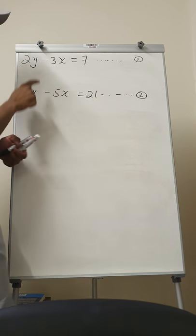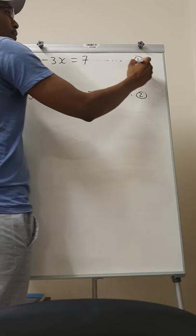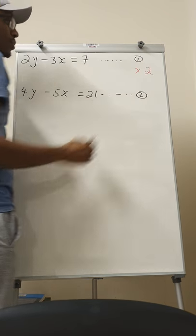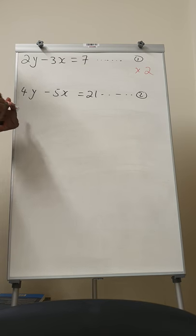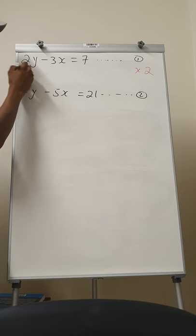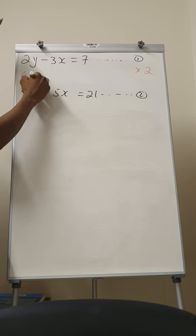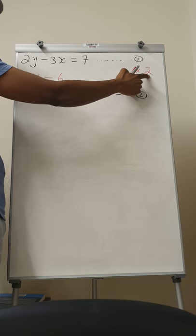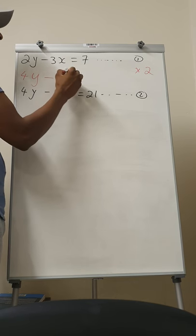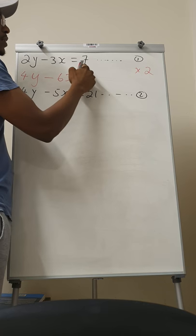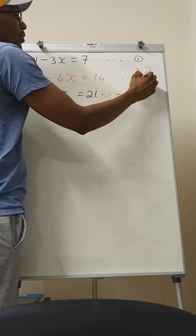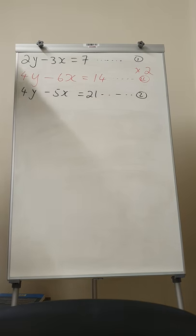So what you can do here in this case, if you check here, if we multiply equation number one by two, we're going to end up with a new equation number one. So two multiplied by two would be 4y and then minus 6x, because of two multiplied by three. And then seven multiplied by two would be 14. So that would be the new equation number one.